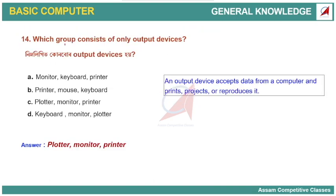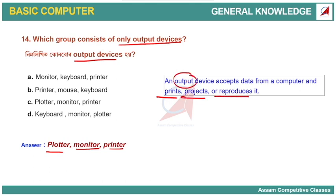Which group consists of only output devices? The answer is plotter, monitor, and printer. An output device accepts computer data and can print, project, or reproduce it. Examples of output devices include plotter, monitor, and printer.